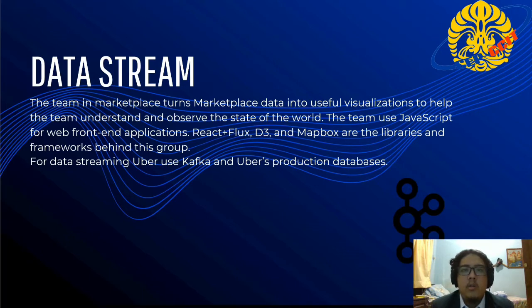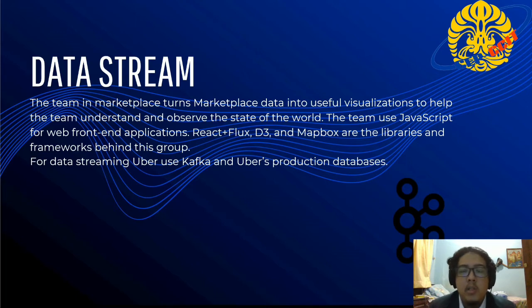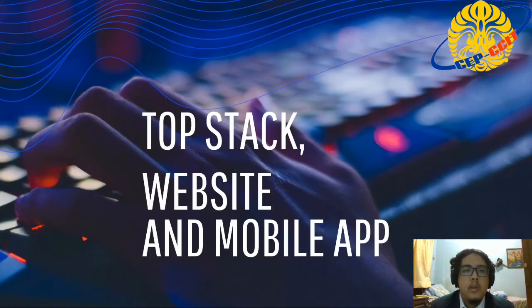For data streaming, the team uses JavaScript and React for front-end web development. React, Flux, D3, and Mapbox are used for libraries and frameworks within this group. For data streaming, Uber uses Kafka and the Uber production database.